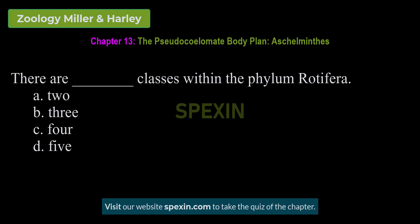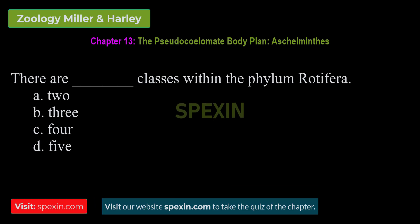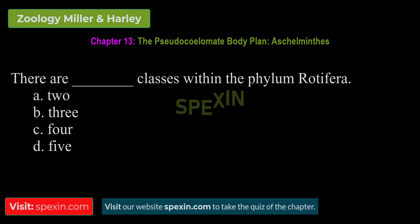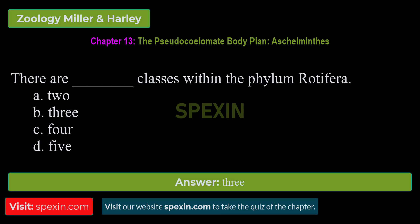There are how many classes within the phylum Rotifera? A. 2. B. 3. C. 4. D. 5. Correct answer: 3.